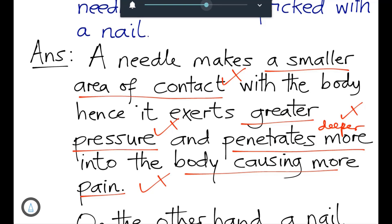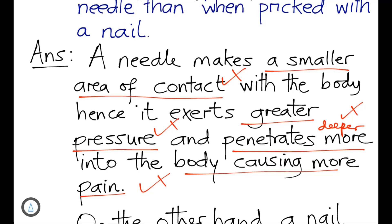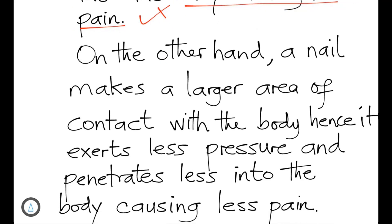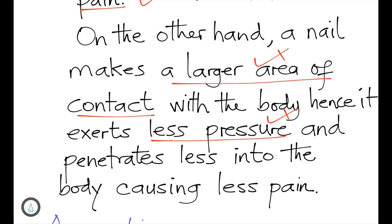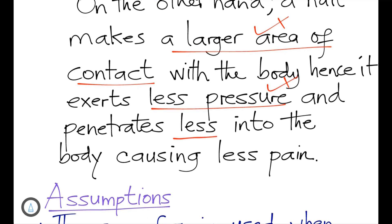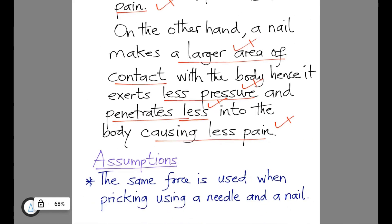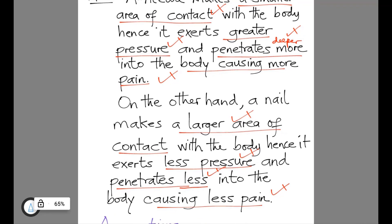This question is worth about four marks. On the other hand, a nail makes a larger area of contact with the body, hence it exerts less pressure. It penetrates less into the body, causing less pain. Note: always say 'area of contact,' not 'surface area.'